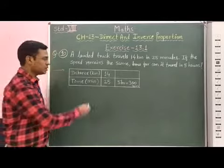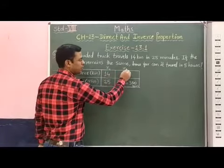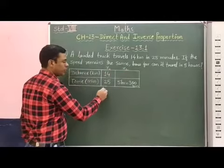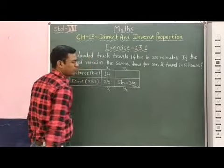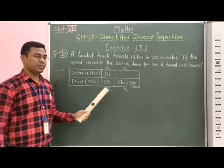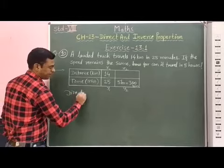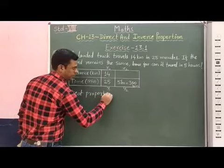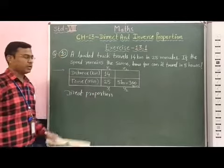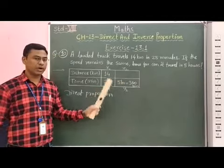Therefore, students, if we consider your first value takes X1, therefore, second value takes X2. For second quantity, first value Y1, therefore, second value Y2. It is example of direct proportion. Therefore, here, X1 upon Y1 is equal to X2 upon Y2.